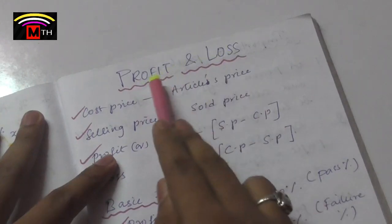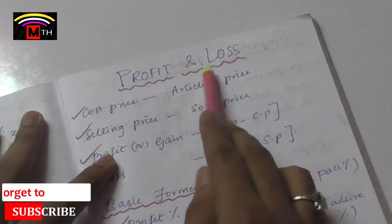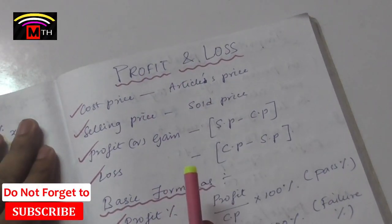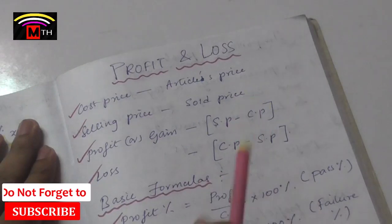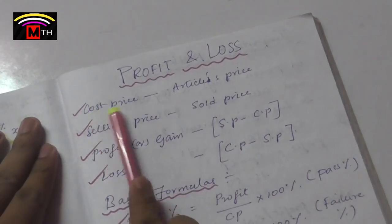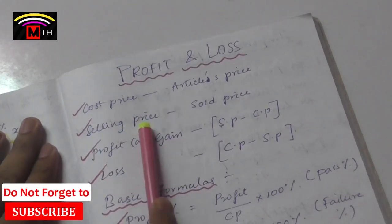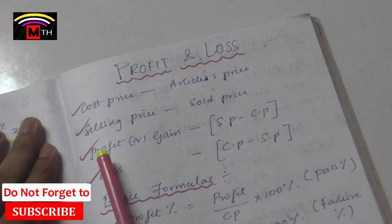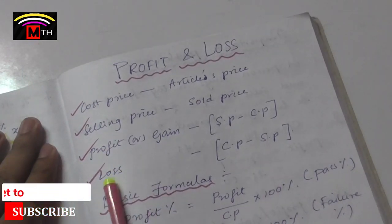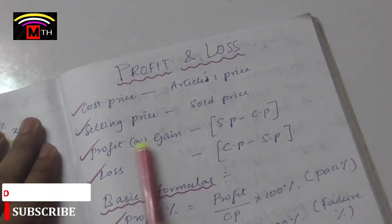In this case, we will find the terms. Basically, we will find the questions and answers. We will find the Cost Price, Selling Price, Profit or Gain, and Loss. These are very important.